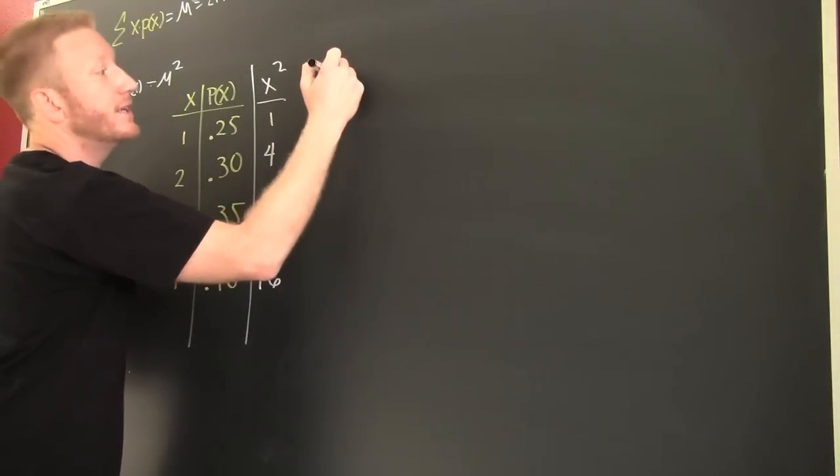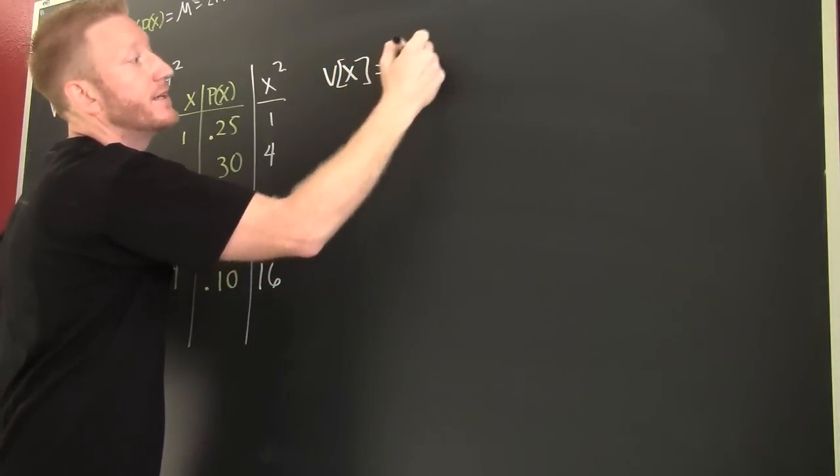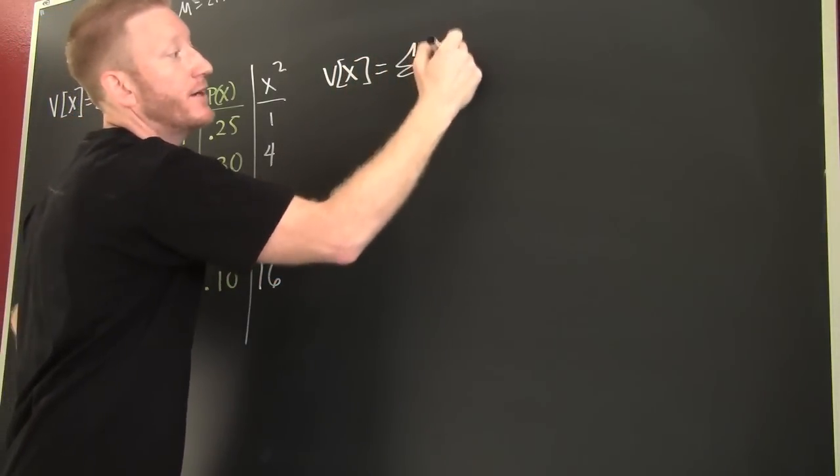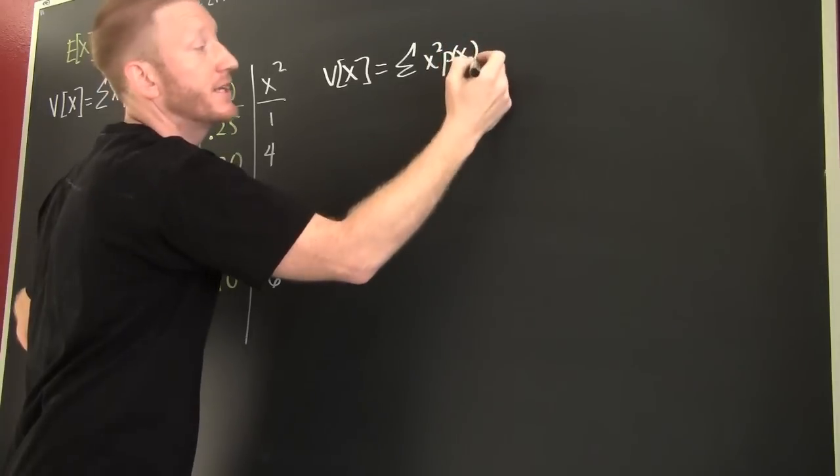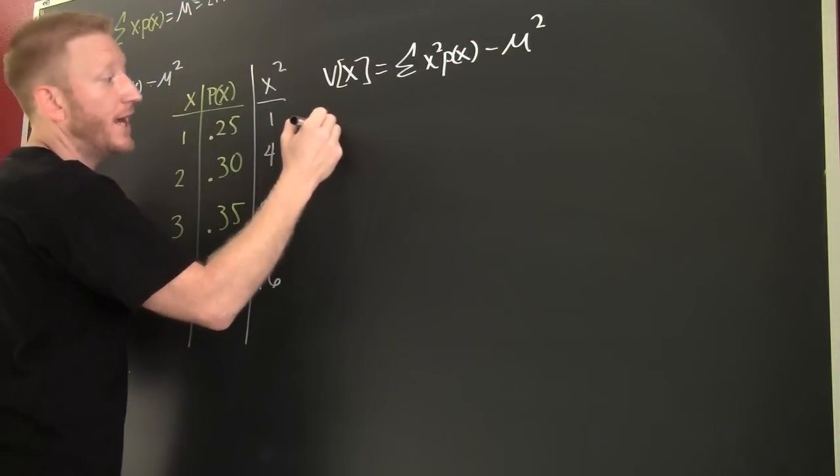Sum of x times p of x. Why? Because we're dealing with this variance. The variance of x. This is going to be the sum of the x's squared, p of x, the probability of occurrence, minus the average squared. So, okay.